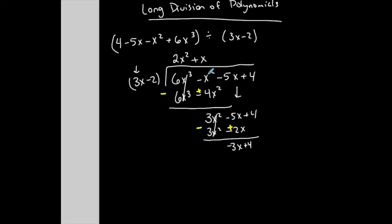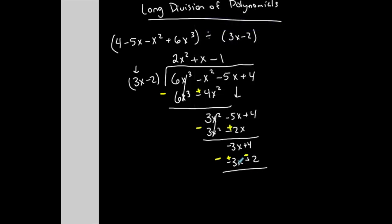Can I continue? Yes — the degree here is the same as the divisor's degree, so I keep going. 3x goes into negative 3x: I multiply by negative 1. Negative 1 times 3x is negative 3x, and negative 1 times negative 2 is positive 2. I subtract again — that negative distributes: minus negative 3x gives plus 3x, and minus positive 2 is minus 2. 4 minus 2 is 2. Can I continue? The degree of 2 is 0, which is less than the degree of 3x, so 3x can't multiply by any basic number to reach 2. This is my remainder.